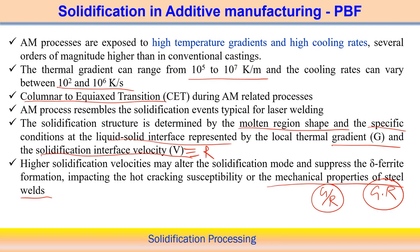To understand the structure in steel, we focus on what amount of delta ferrite typically forms at this particular cooling rate or at the particular G and R values associated with the additive manufacturing process. We will discuss further what the solidified structure of an AM component can be for different types of steels.